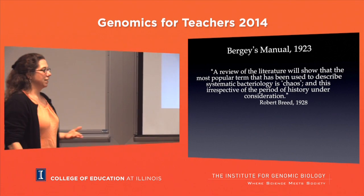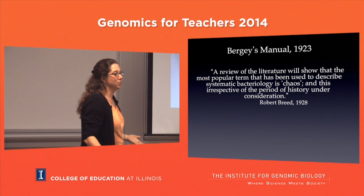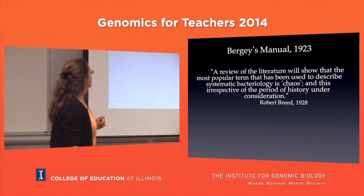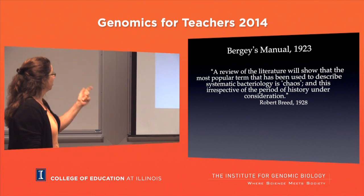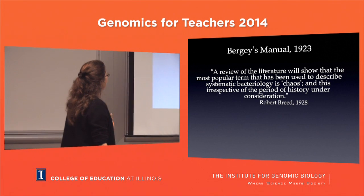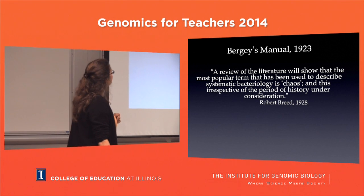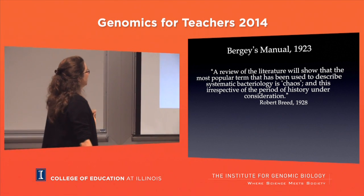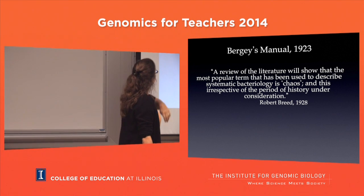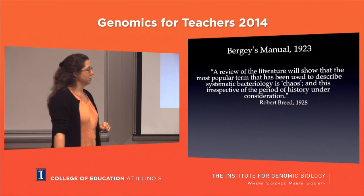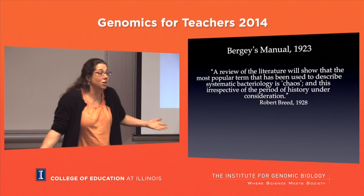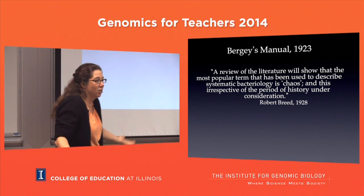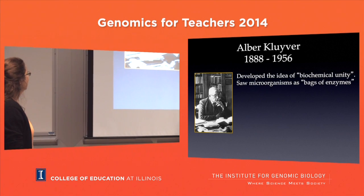Bergey's Manual is the taxonomy manual that has been used for a long time. Here's what they said about microorganisms in 1923 or 1928: 'A review of the literature will show that the most popular term used to describe systematic bacteriology is chaos.' This is irrespective of the period of history - you just don't know who's related to who, how they evolved, anything about them, because there's nothing to go on.